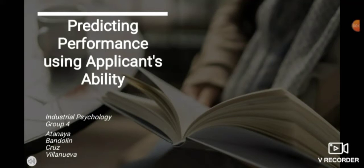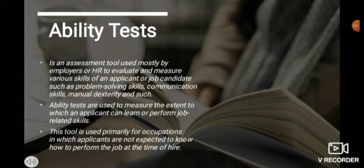Good day everyone, we are group 4 and we are here to present predicting performance using the applicant's ability. In predicting the performance of applicants, employers and HR professionals use ability tests. An ability test is an assessment tool used mostly by employers and HR personnel to evaluate and measure various skills of an applicant or job candidate such as problem solving skills, communication skills, manual dexterity, and such.